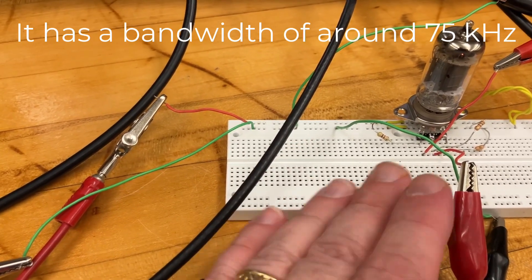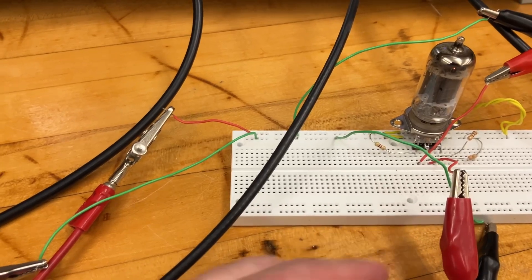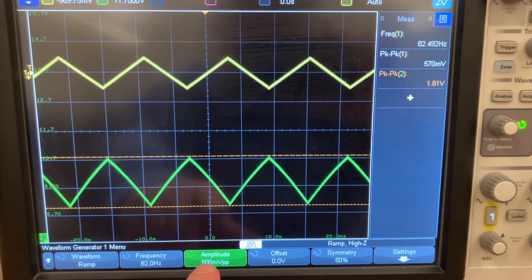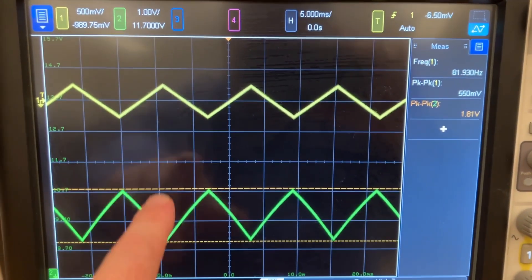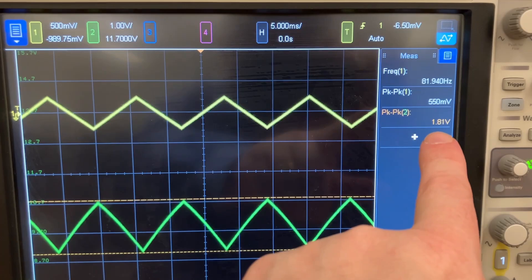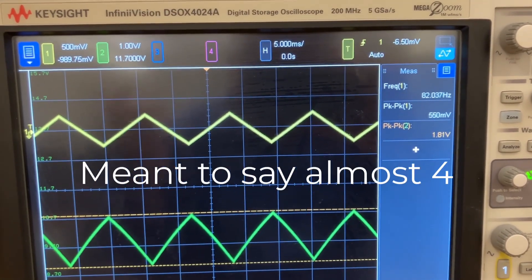You might imagine this is DC coupled to a following stage, or you would want to put a capacitor here. Anyway, I have a 500-millivolt peak-to-peak signal going in, and coming out, I have a 1.8-volt signal. That's a gain of almost 3, but not quite.